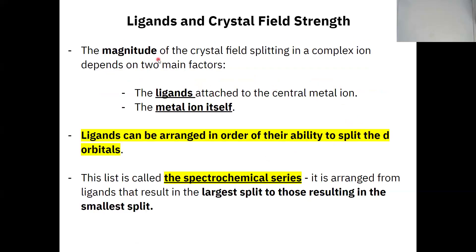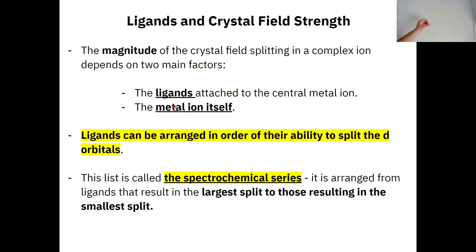Now we have to figure out what makes something have a large gap versus a small gap. There are two things that can really affect the size of the crystal field splitting energy. One is the type of ligand that attaches to the central metal, and the other is the charge of the central metal ion itself. We'll look at both of those things and see how they affect the size of the split.